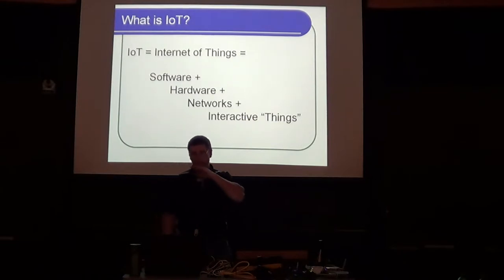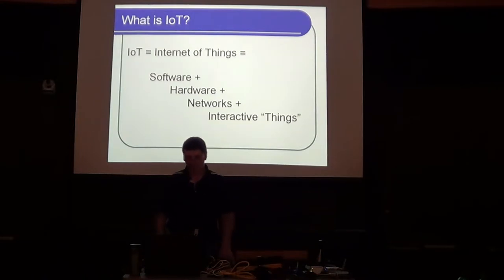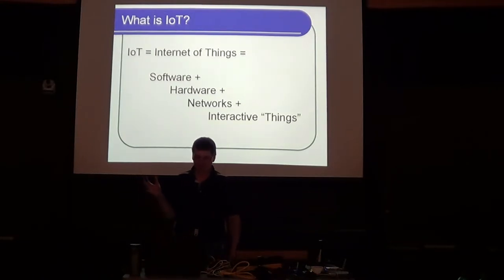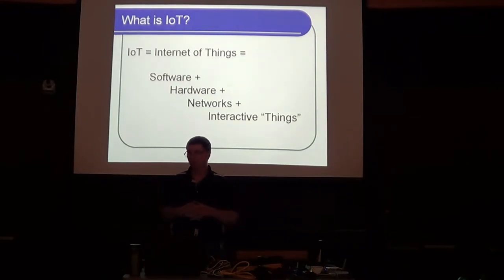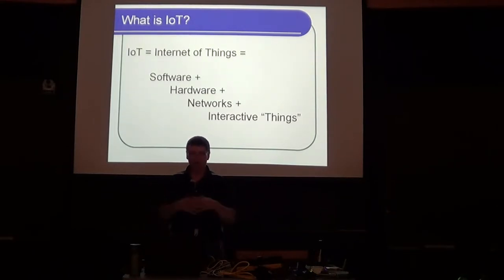So that's the broad landscape. We can vector off in a bunch of different areas, but to me the Internet of Things is made up of these fundamental components — software, hardware, networks — and we've got them all right here today.